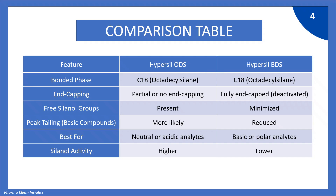Free silanol groups are more likely present in Hypersil ODS, while they are minimized in Hypersil BDS. Peak tailing is more likely observed in Hypersil ODS column, while it is reduced in Hypersil BDS column.